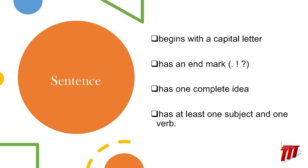Every sentence also must have a complete idea. It must make sense on its own. That's very important when we get to later in this lesson, so think about that. And a sentence has at least one subject and one verb.